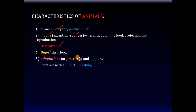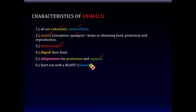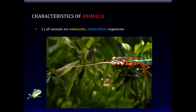Fifthly, they have adaptations that protect and support them — body adaptations such as skeletons — that are designed to protect and support them, which of course has a survival advantage. And finally, all animals start out in a blastula state; that is, the early embryological development is the same. So these are six important characteristics shared by all animals.